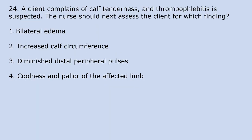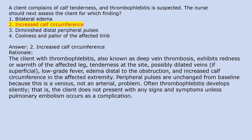A client complains of calf tenderness and thrombophlebitis is suspected. The nurse should next assess the client for which finding? 1. Bilateral edema. 2. Increased calf circumference. 3. Diminished distal peripheral pulses. 4. Coolness and pallor of the affected limb. Answer 2. Increased calf circumference. Rationale: The client with thrombophlebitis (deep vein thrombosis) exhibits redness or warmth of the affected leg, tenderness at the site, possibly dilated veins if superficial, low-grade fever, edema distal to the obstruction, and increased calf circumference in the affected extremity. Peripheral pulses are unchanged because this is a venous, not arterial, problem. Often thrombophlebitis develops silently with no signs or symptoms unless pulmonary embolism occurs.